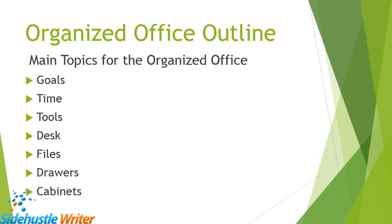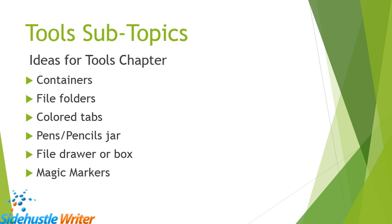I'm just going to give you an example. Let's say I'm writing a book about the organized office and I know my main topics are going to be goals, time, tools, desk, files, drawers, cabinets. So those are my seven chapters. In the tools chapter, my subtopics — the things I want to include so readers will understand what to do — are containers, file folders, colored tabs, pencils and pens, file drawers or boxes, and magic markers.